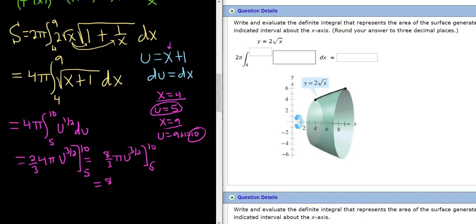So this is 8 thirds pi. Then you plug in the 10. So that will give us 10 to the 3 halves. Subtract, plug in the 5. That gives us 5 to the 3 halves. So you totally want to have a calculator for this. So let's see. This is 8 over 3 times pi, and then times, and then 10 to the 3 halves minus 5 to the 3 halves.